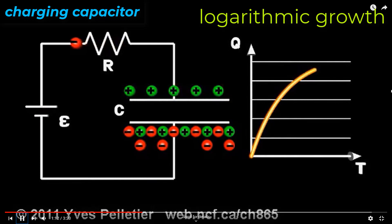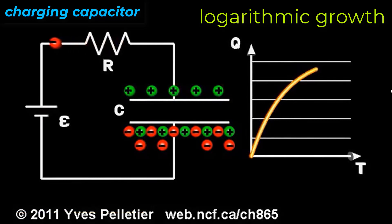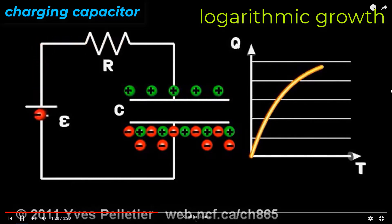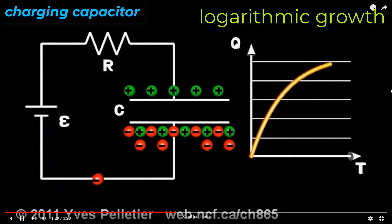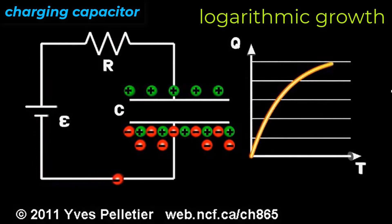This is where you get the flatlining effect. At some point, the battery won't be able to do the work to move any more charges because there's just too much mutual repulsion getting in the way. Technically, this never really flatlines, but it does approach an asymptote.